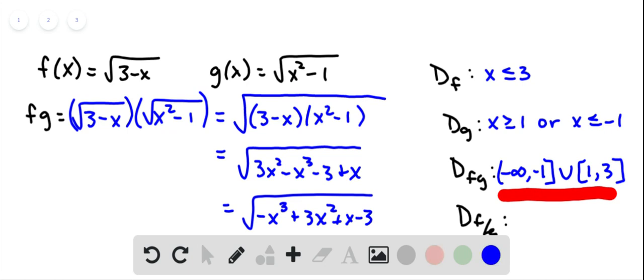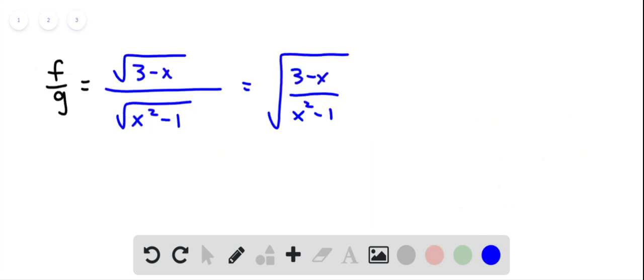For the quotient, you also have to consider that g cannot equal 0 because you can't have 0 in the denominator. That means we can't have x equals 1. We can't have x equals negative 1.